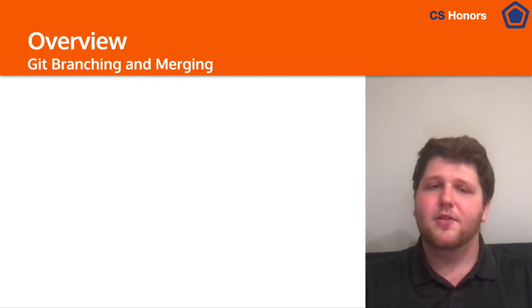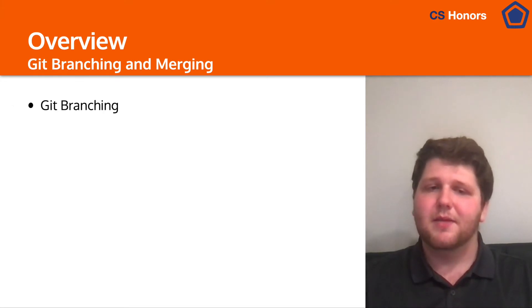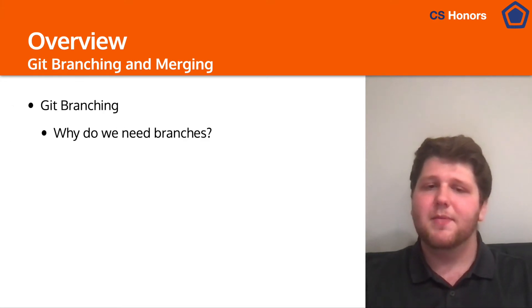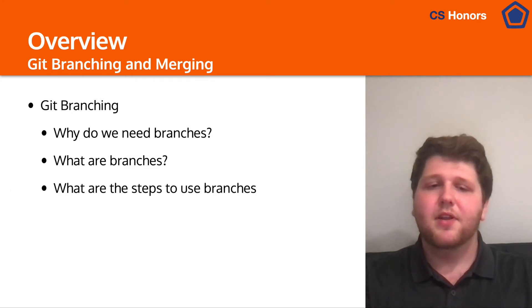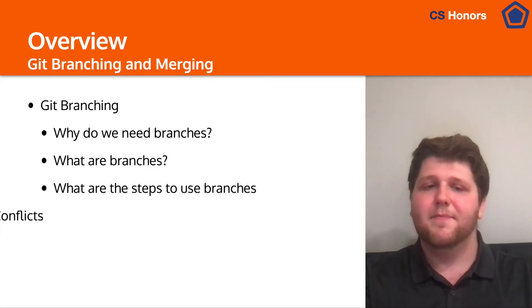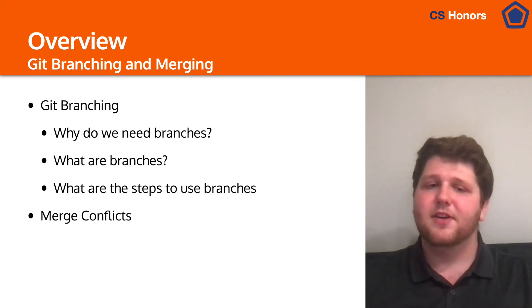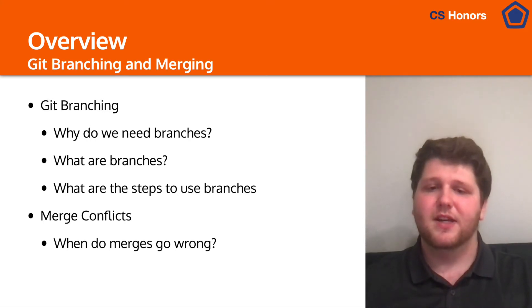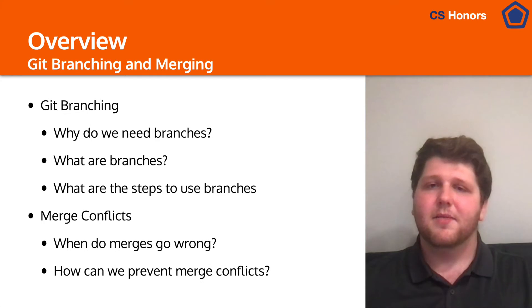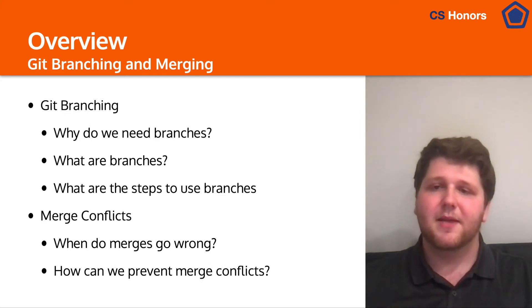So now let's talk about what we're going to do today. We're going to talk about Git branching — specifically why we need branches, what they are, and the steps we can go through to use them. We'll also talk about merge conflicts, which is part of branching — basically when merges go wrong, when you take two branches and try to make them one again. And we'll also talk about how you can potentially prevent them.